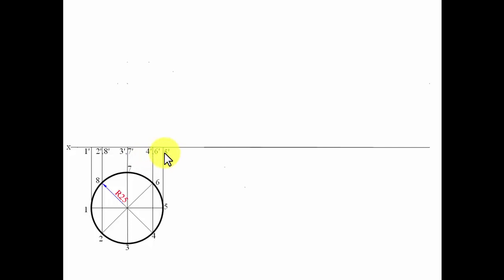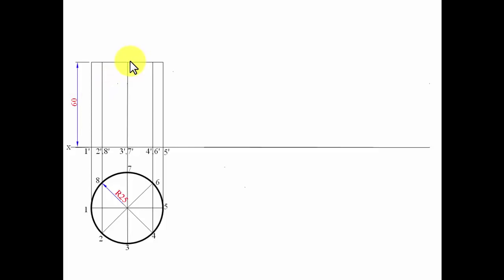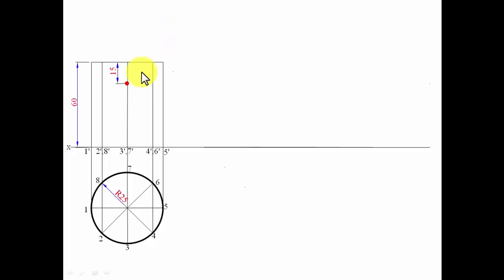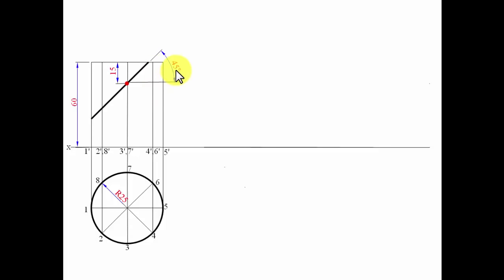Let me give the cylinder its height of 60 millimeters. The cutting plane passes through the axis — the axis is here — with a point 15 mm below the top of the axis. Through this point, the cutting plane passes making an angle of 45 degrees with the horizontal plane. That's the 45-degree angle made by this cutting plane.